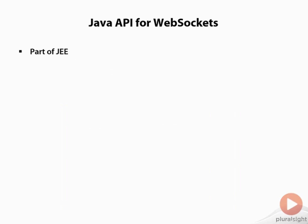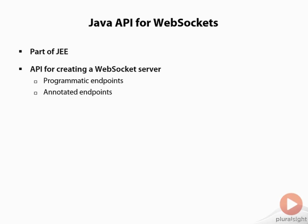The Java API for WebSockets is part of JEE since version 7. It's an API that lets us create a WebSocket server, and we can run code like this inside, for example, Tomcat or Jetty or any standard Java JEE server. It allows us to create what's called an endpoint, and we can do that in one of two ways — programmatically using an API, or using Java annotations.